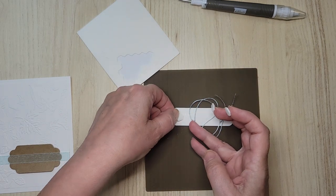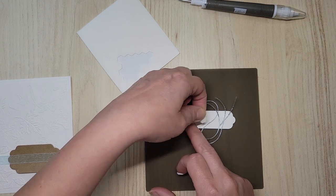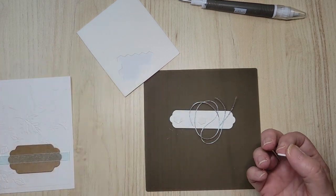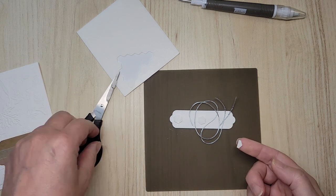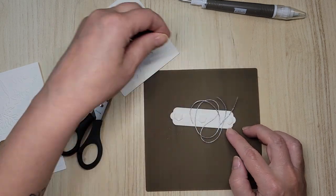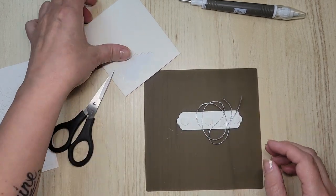Next thing is the dimensionals. I'm using the large. If you have the smaller ones, you can use those too. So we want to pop it up. One thing you want to avoid is putting your dimensional on top of your ribbon or trim. So what I can do is do the sneaky sneak and cut it.